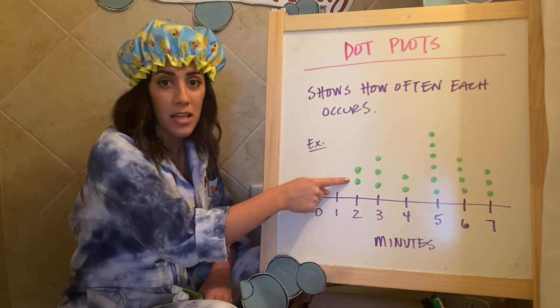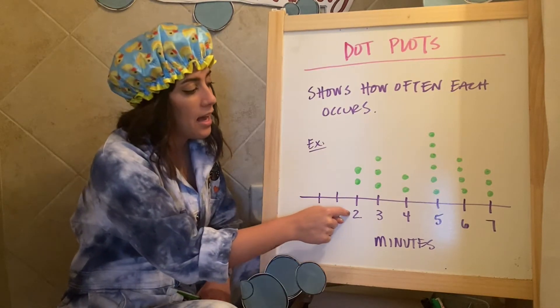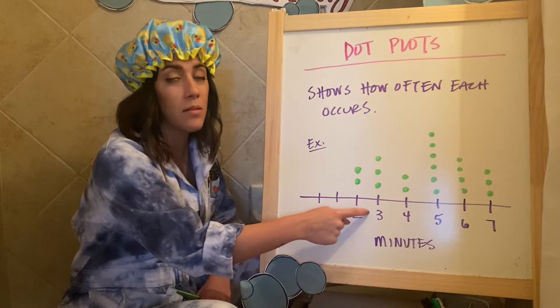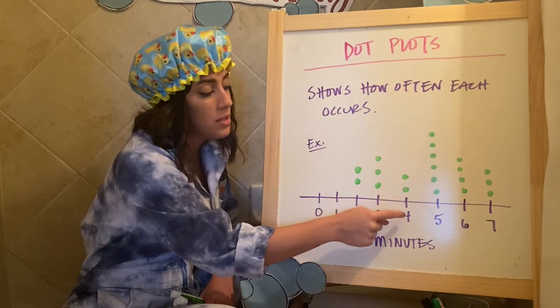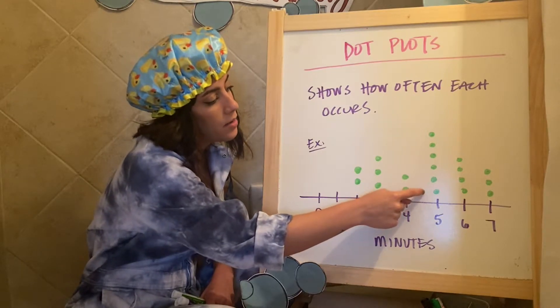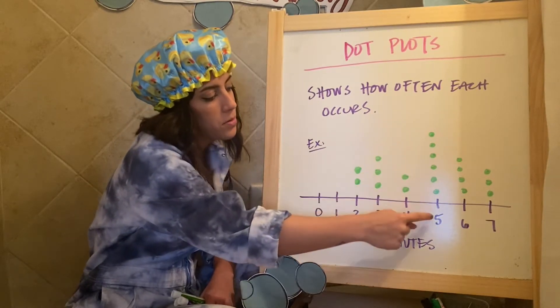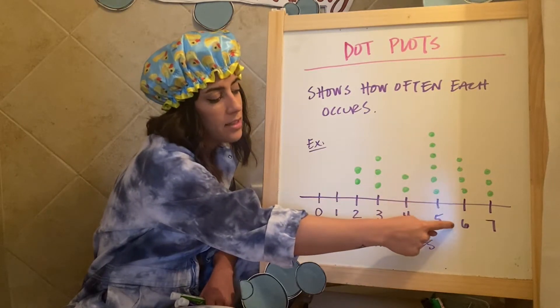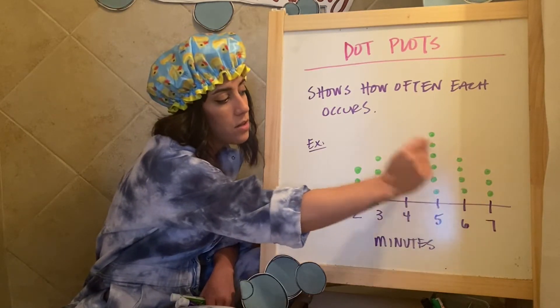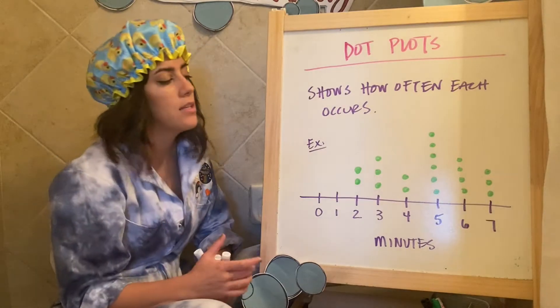I had two people tell me they take two minutes. I had three people take me, they tell me they take three minutes. I had four people, excuse me, two people tell me they take four minutes. I had one, two, three, four, five, six people tell me they take five minutes to eat breakfast for people that they take six minutes to eat breakfast and three that they take seven minutes to eat breakfast.